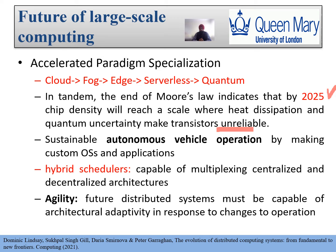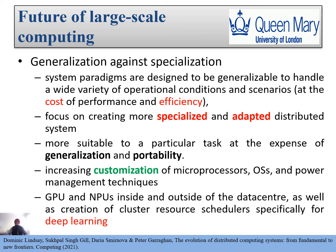The next thing is hybrid schedulers capable of multiplexing centralized and decentralized architectures — making the best use of both. Future distributed systems must also be adaptive to environment changes: any type of change can happen, and having systems ready to adapt to environmental conditions would make these distributed systems more reliable, flexible, and adaptable.